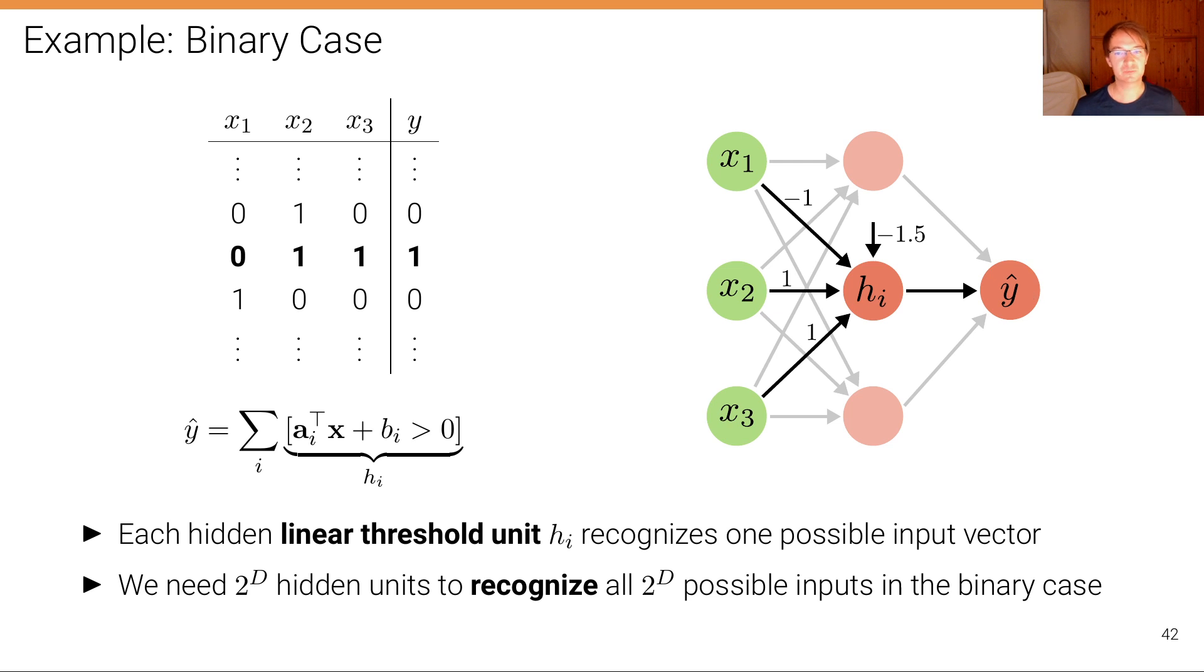That is predicted by a multi-layer perceptron with hidden layer h, and both the input and the output are binary, so the input x's and the output y's can only take zero or one. And let's for a moment assume these hidden units are linear threshold units.